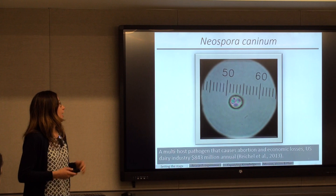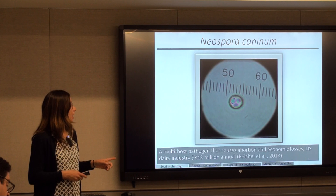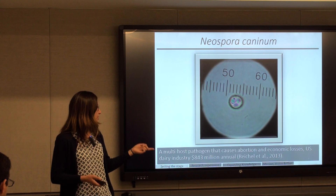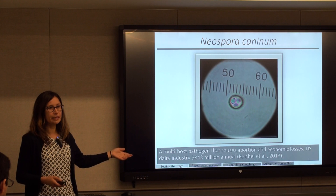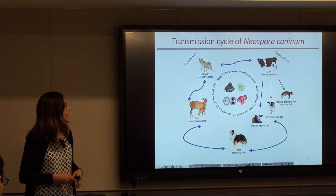The main pathogen in this study is Neospora caninum — a parasite and multi-host pathogen. This parasite causes abortion in livestock and wild animals. It also causes significant economic losses; a 2013 study by an economist estimated a loss of $843 million annually due to this parasite in the dairy industry.